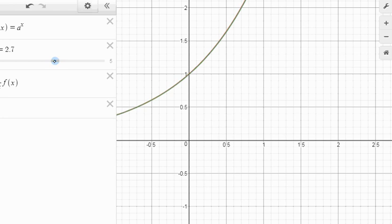And if we do that to about 2.7, you'll notice that the curve, the green curve, lies on top of the red curve. In other words, the value of the gradient of the red curve is 1 when y equals 1. We will meet our target.